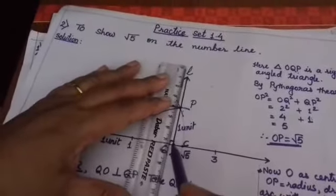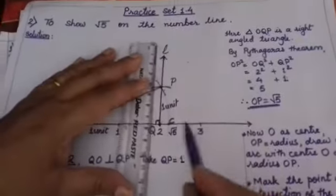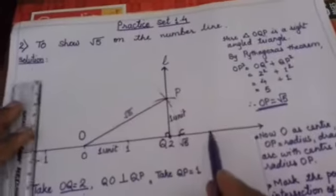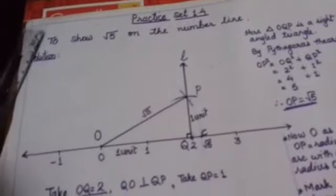How we have drawn over here? Draw one perpendicular line from this point 2 and take that point as L. This line is perpendicular to the given number line. Now what we have to do?